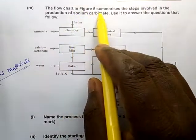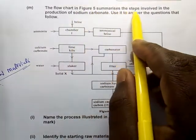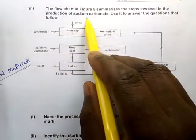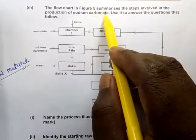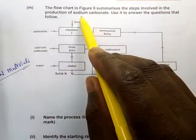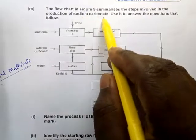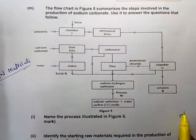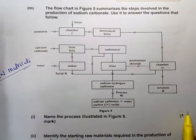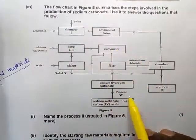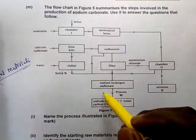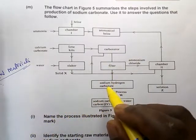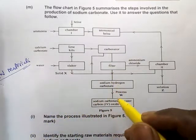The flowchart summarizes the steps involved in the production of sodium carbonate. The Solvay process is basically for the production of sodium carbonate. You should be able to analyze this diagram and answer every question before even looking at the question.